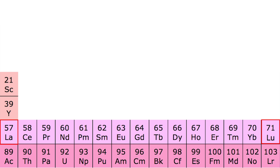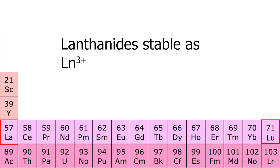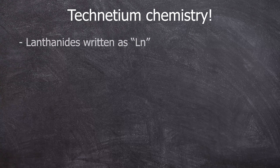Lanthanides have all quite similar chemistry. For example, they are all stable with the oxidation state of plus three. Of course, there are exceptions that are stable with other oxidation states, but that's for the future. Lanthanides are abbreviated as Ln.